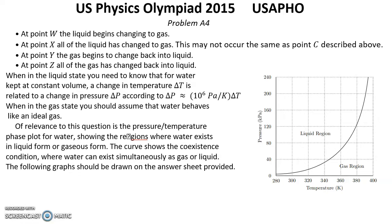When in the liquid state, for water kept at constant volume, a change in temperature ΔT is related to a change in pressure ΔP according to: ΔP ≈ 10⁶ pascal per kelvin multiplied by ΔT. When in the gas state, assume that water behaves like an ideal gas. Of relevance to this question is the pressure-temperature phase plot for water, showing the regions where water exists in liquid or gaseous form. The curve shows the coexistence condition where water can exist simultaneously as gas or liquid.